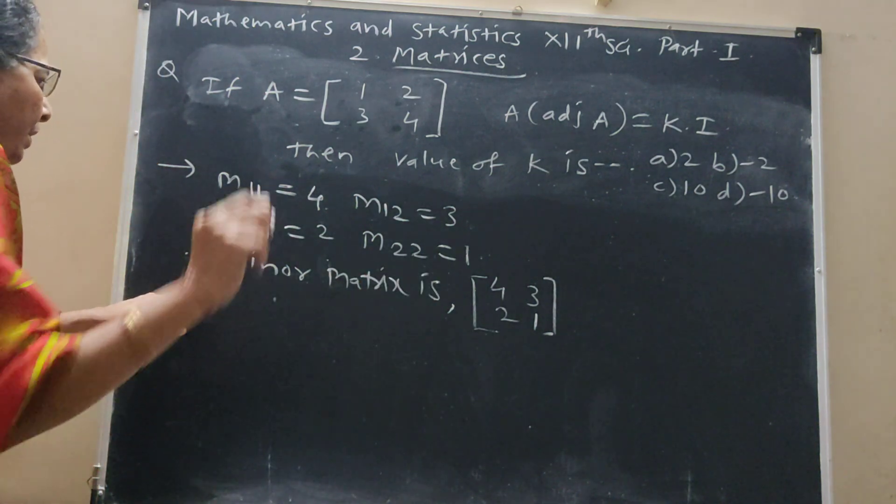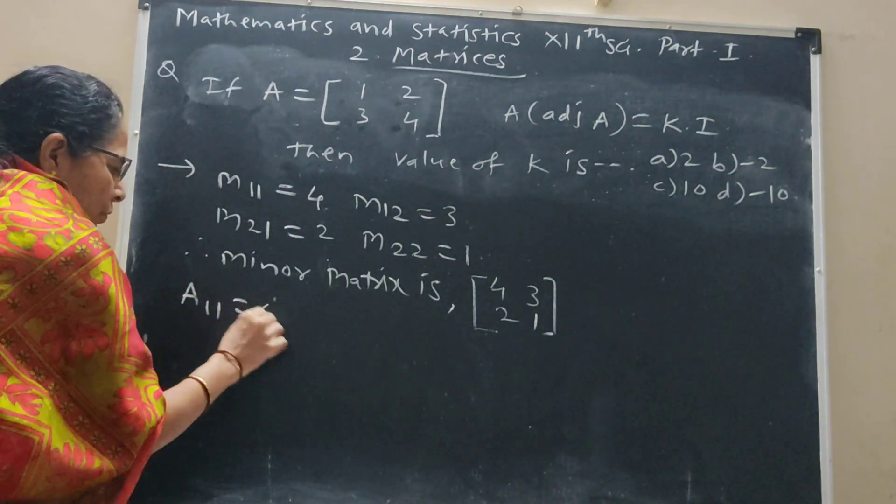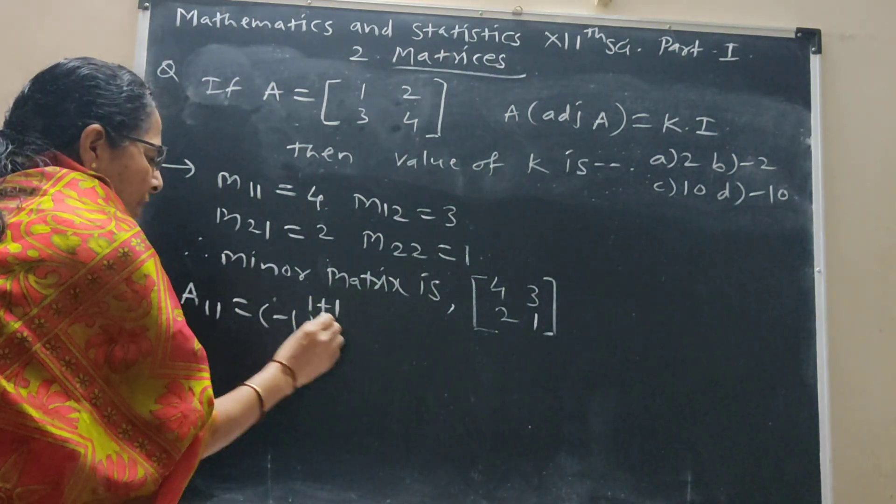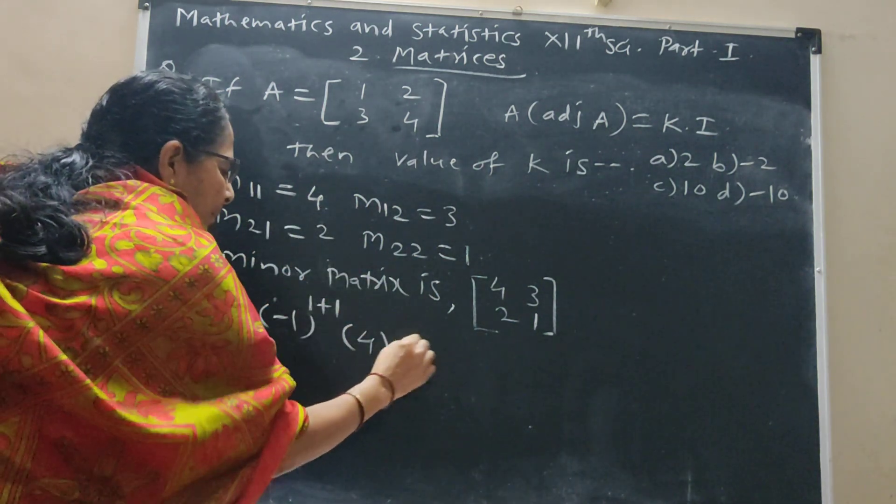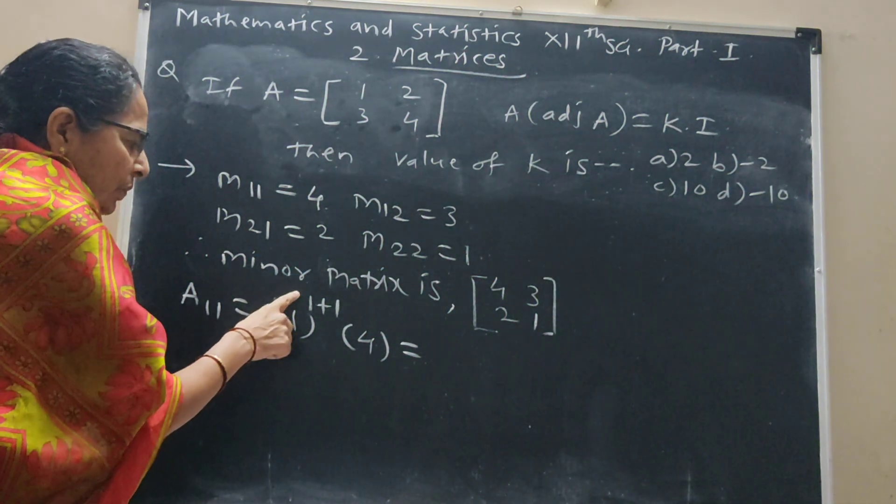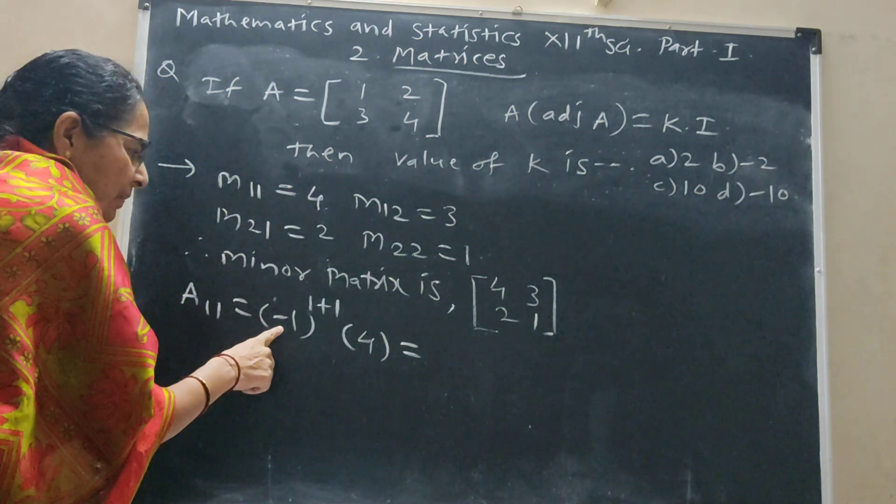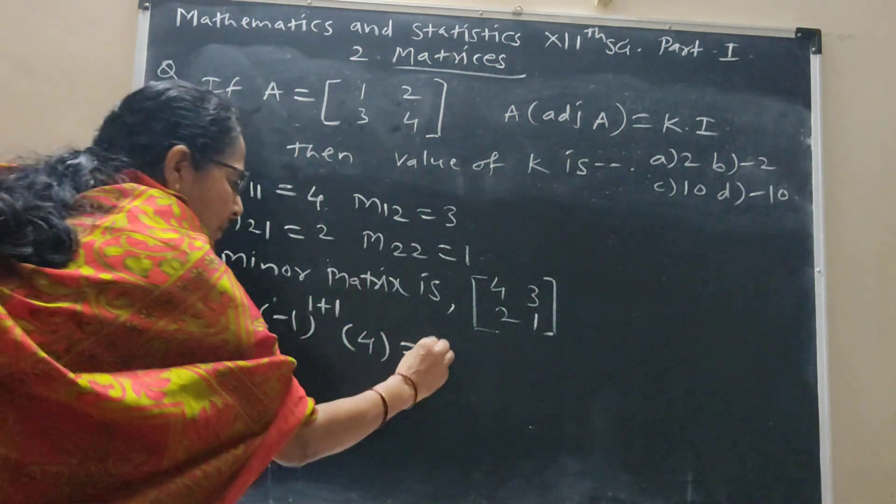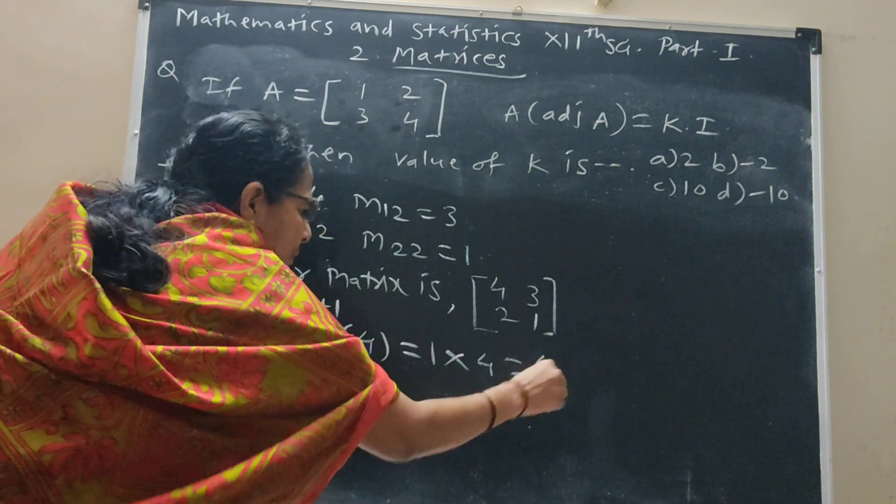Then, next we have to find cofactors. So, A_1,1 is equal to (-1) raised to 1 plus 1, and this is the cofactor with minor 4. So, here E1, here is negative value, E1 index, then 2 is 1. That means (-1) to the power E1, then 2 is 1, times 4, product is 4.